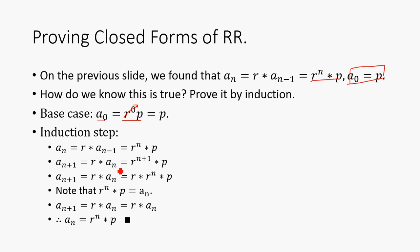Now we need to prove that the induction step works. Well, a_n is going to be equal to r^n * p. So that means a_(n+1) is going to be equal to r * a_n, which is r^(n+1) * p. Which also means that this is equivalent to r * r^n * p.